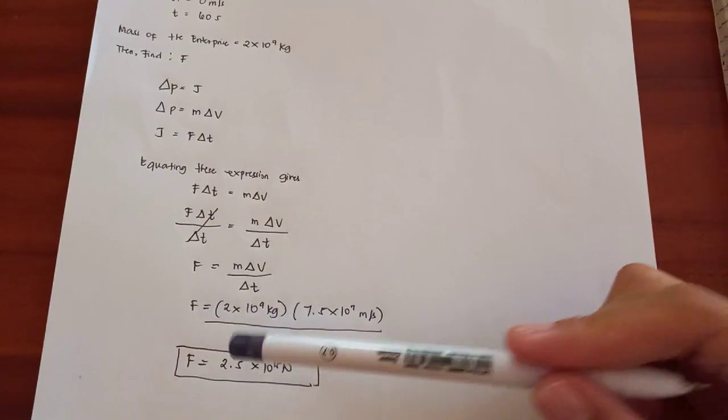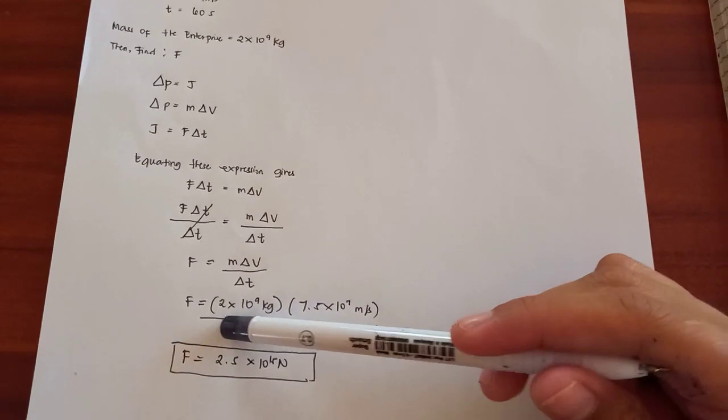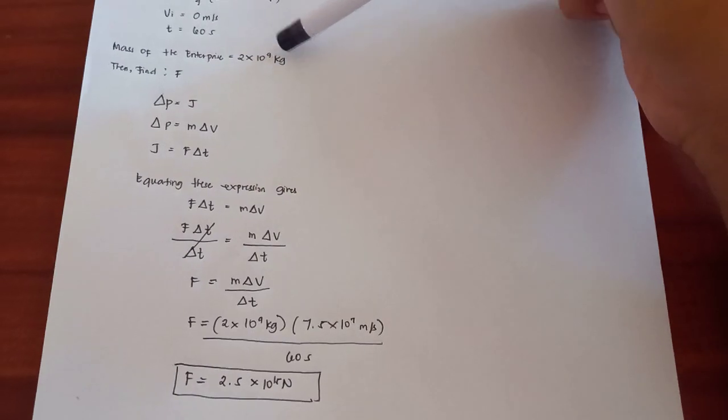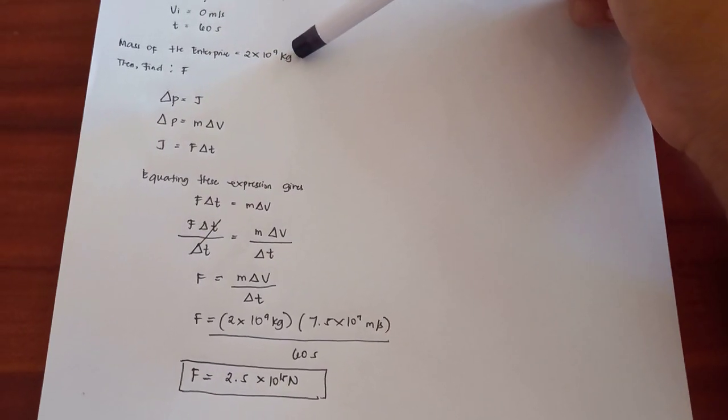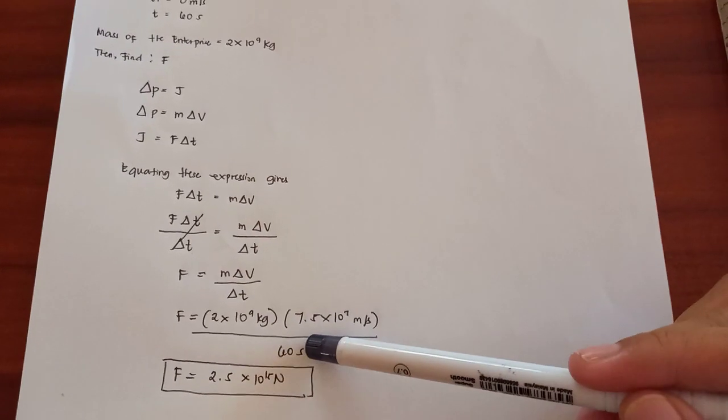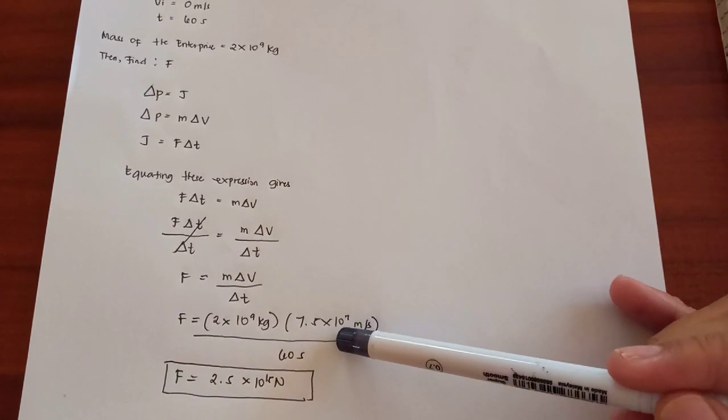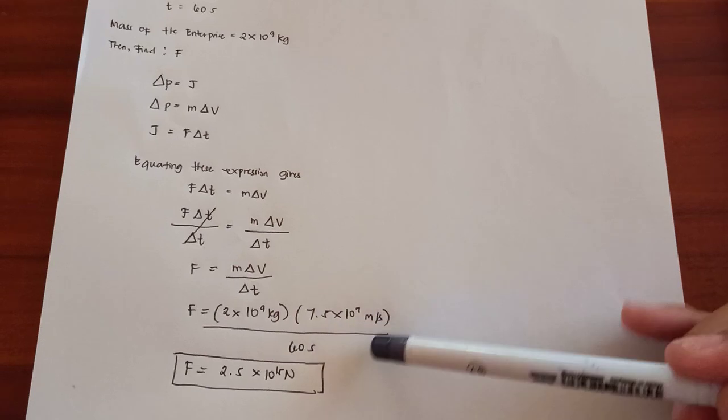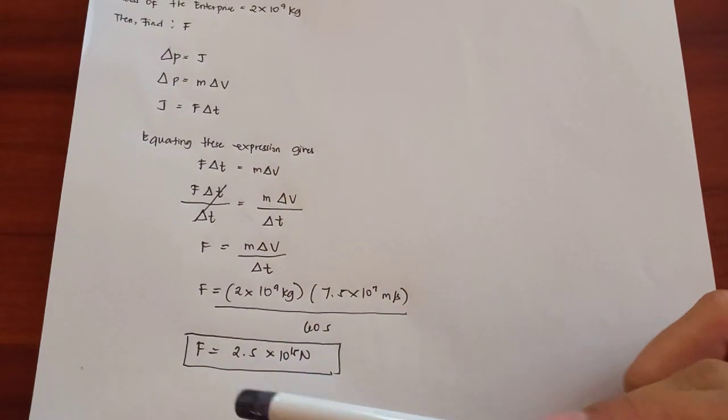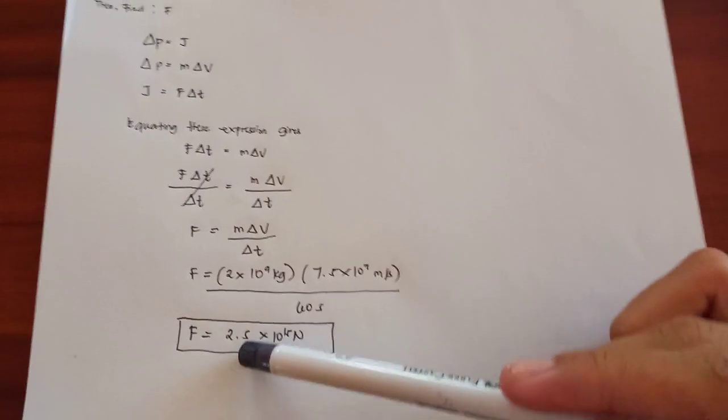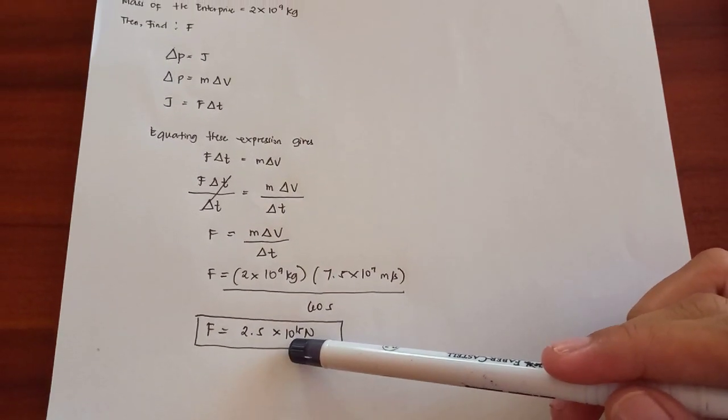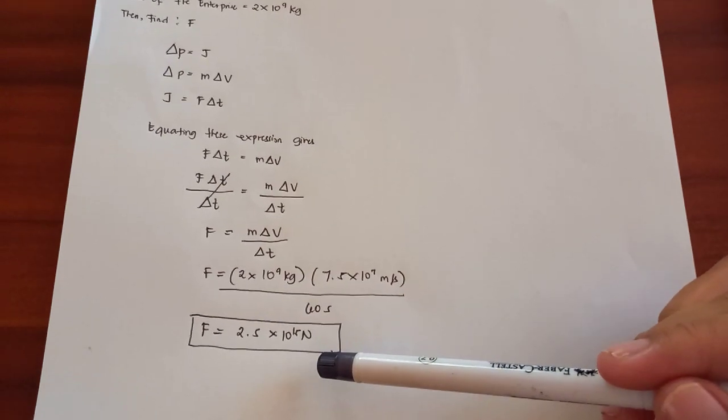So f equals mass, which is the mass of enterprise equals 2 times 10 to the 9th power kilograms, times 7.5 times 10 to the 7th power meters per second over 60 seconds. So the force is 2.5 times 10 to the 15th power newtons.